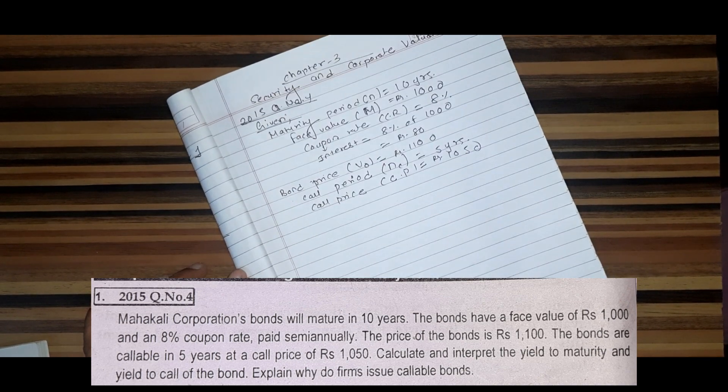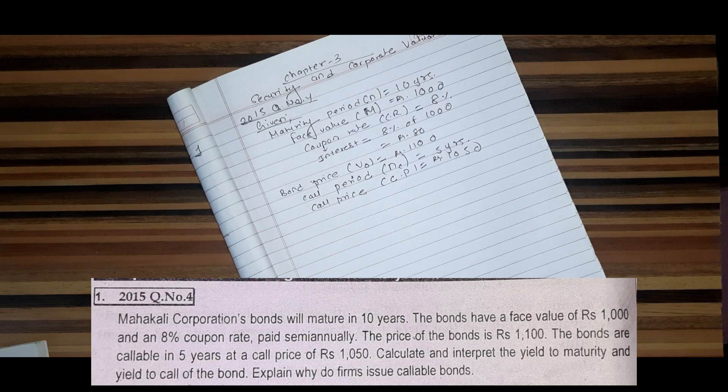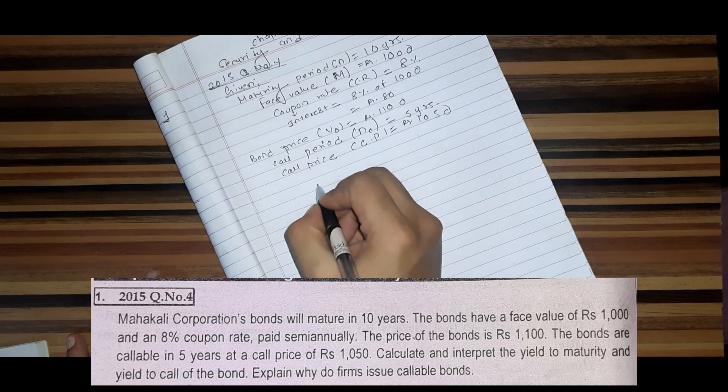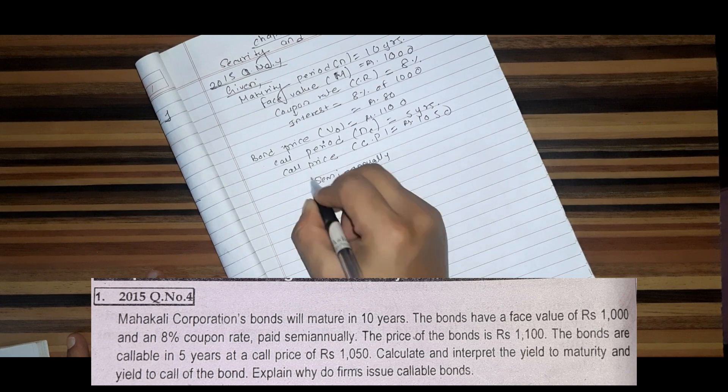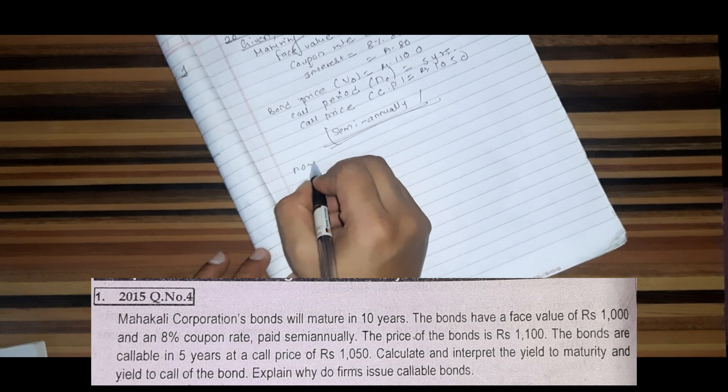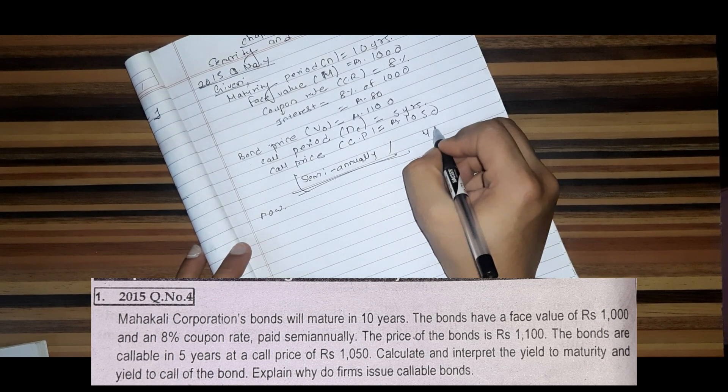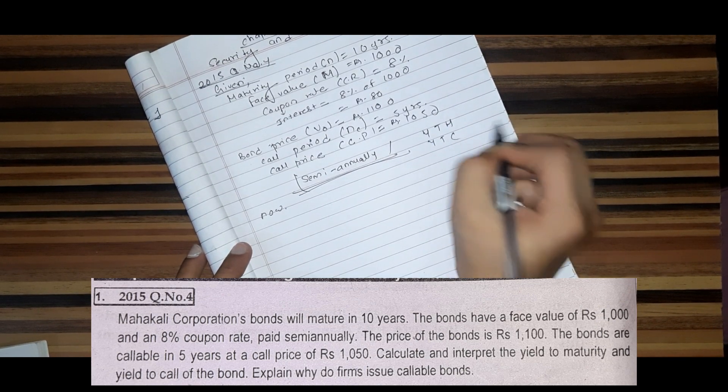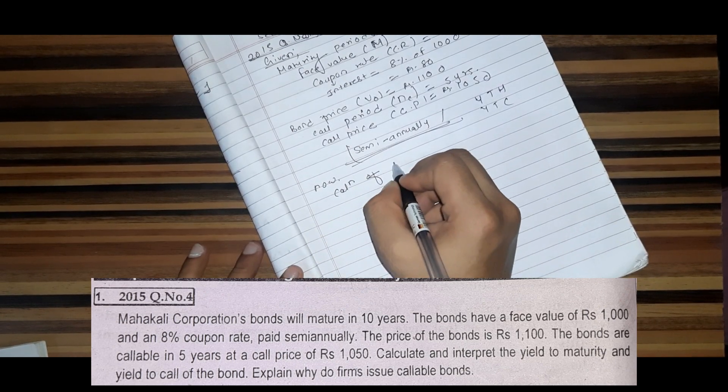Calculate and interpret the yield to maturity and yield to call of the bond. Explain why do firms issue callable bonds. In this question, we need to find the yield to maturity and yield to call.